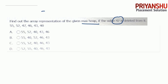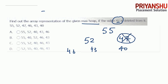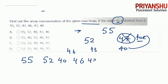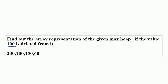Let's represent this array as a tree: 55, 52, 47, then 46, 43, and finally 40. We need to remove 47. After removing 47, that position becomes nil and 40 is placed there. Reading the result from left to right: 55, 52, 40, 46, 43. So the answer is option C.